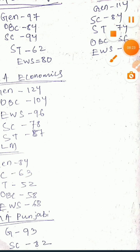Next, MA Economics: OBC is 68, EWS is 68. Next, LLM: General is 84, SC is 63, ST is 52, OBC is 58, EWS is 68.